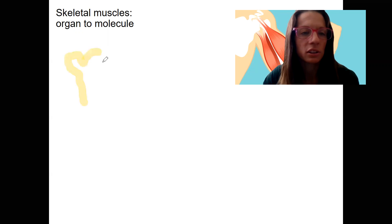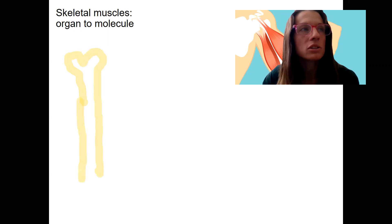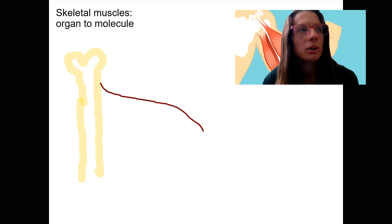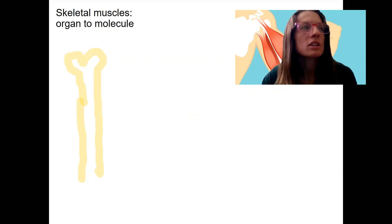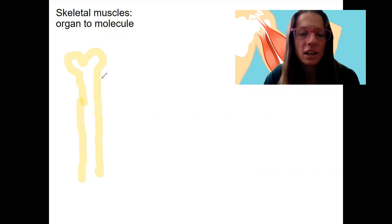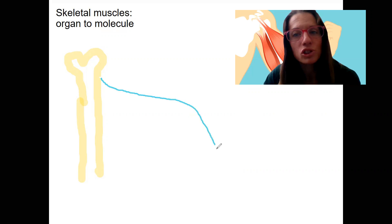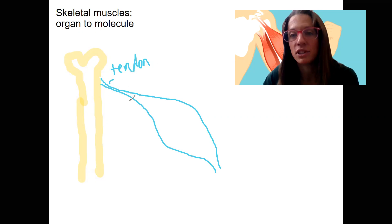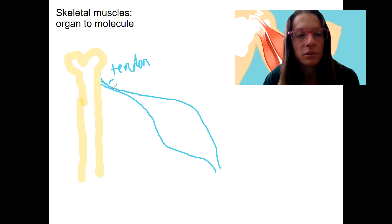Remember that muscle attaches to bone. A muscle is going to attach at a tendon — blue is going to be our tendon color. And that is going to bulge where it's filled with skeletal muscle. Notice that the muscle is covered in the same material the tendon is made up of, because it is. That's connective tissue that surrounds the muscle and then joins here to make up that tendon.